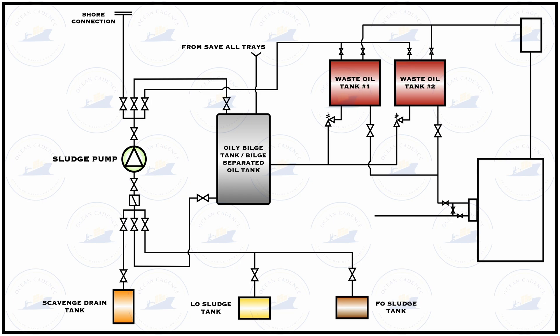The waste oil tank gets filled by the discharge of the sludge pump and has separate arrangements for the evaporation of water present within the sludge, with the help of heating coils available within the waste oil tank. The vent and vapor line allows the water vapor generated by evaporation to go into the funnel section where there is a mist box, and through the mist box to escape into the atmosphere as clean water vapor containing no oil residues.